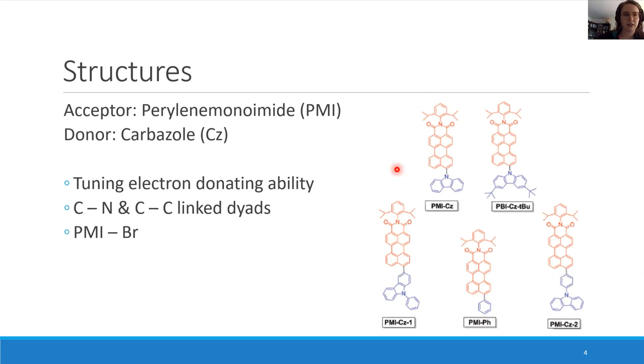They wanted to tune the electron donating ability by introducing tert-butyl groups at the carbazole unit. The donor and acceptor are connected via a single CN bond, but they also wanted to study what happens with a CC linkage, directly or with an intervening vinyl group. As a reference, they used PMI with bromide, which is a heavy atom.